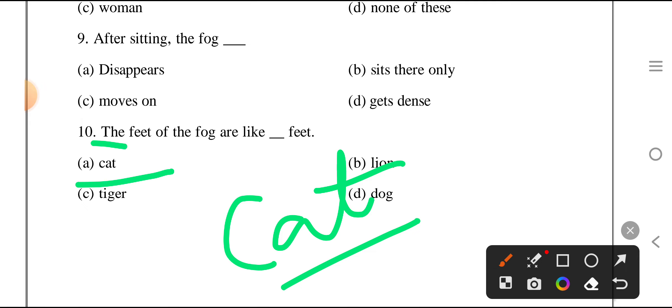What poetic device is used? Because fog is being compared with cat, so the device here will be simile.